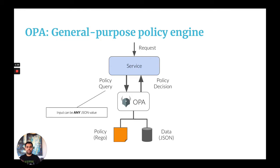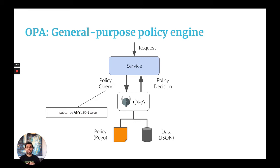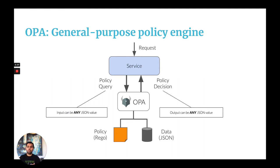The policy query itself can be any JSON value. For example, if you're doing API authorization, this policy query could be the HTTP method, the path, and so on. And if you're doing Kubernetes admission control, your policy query could include the pod manifest. So as long as you give OPA some kind of structured data and you write policies that make sense for that data, OPA sends a decision back to your service. That's why OPA is called a general-purpose policy engine — it's not tied to any particular data format. Even the policy decision OPA makes can be any JSON value, not just true/false or allow/deny.